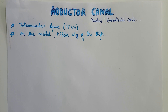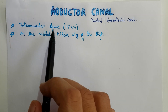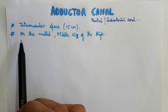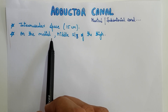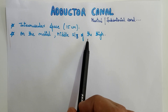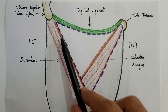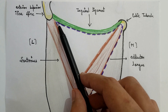Going by the definition, the adductor canal is an intermuscular space of around 15 centimeters in length. It is situated on the medial side of the middle one-third of the thigh region. In this diagram you are able to see the anterior aspect of the upper thigh region, and the blue dotted line represents the femoral triangle.